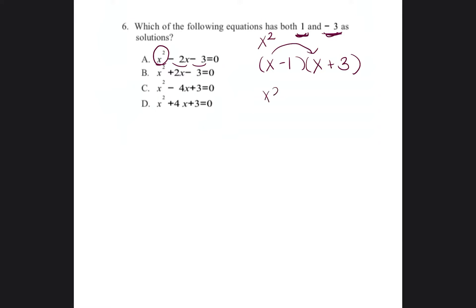x times x would be x squared. x times 3 is positive 3x. Negative 1 times x is negative 1x. And negative 1 times positive 3 is negative 3. We're going to combine like terms: x squared plus 2x minus 3. And we can see that this is answer B. We were able to solve it in a matter of moments.